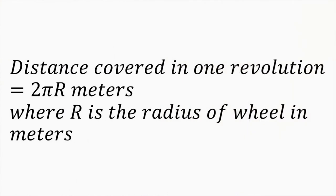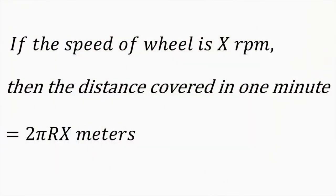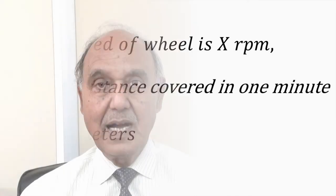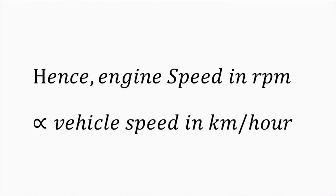The speed of the road wheel is in RPM. Since the road wheel is in frictional contact with the road surface, as it rotates it moves along the road. In one revolution, the road wheel covers a distance of 2πR meters, where R is the radius of the wheel in meters. If the wheel speed is x RPM, it covers 2πRx meters per minute. Multiplying by a suitable factor converts this to km/h. Hence, engine speed is proportional to vehicle speed in km/h.